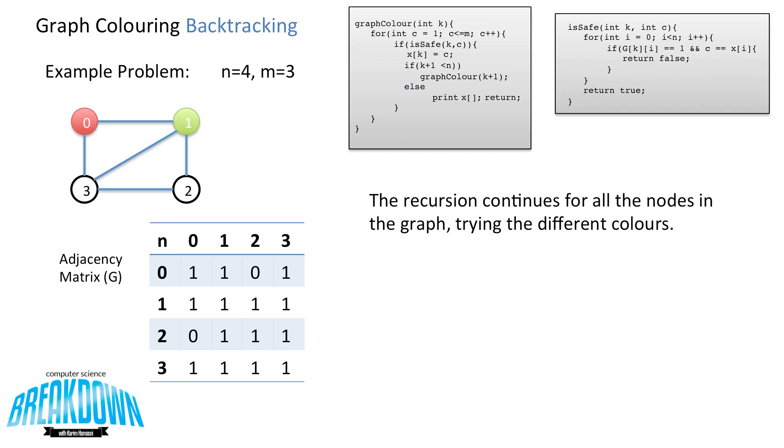So the recursion continues for all the nodes in the graph trying all the different colors. If no color is safe and not all the nodes are filled, it'll backtrack and try a different color on the last node that we've set.